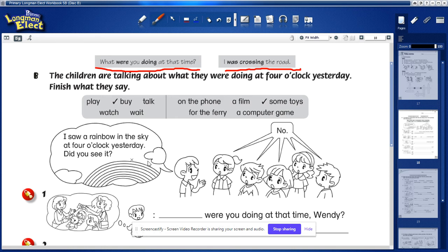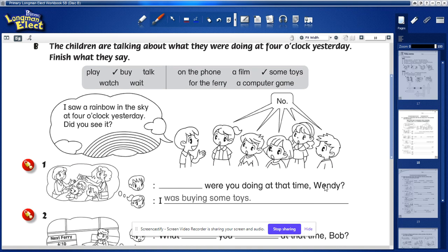This is Wendy. Wendy said I was buying some toys. Look at the picture, find the verb. Buy, buy, buy what? Buy some toys. So you can check off these two expressions and words and form the sentence. Now what is the first word that we can use in here? Of course is...